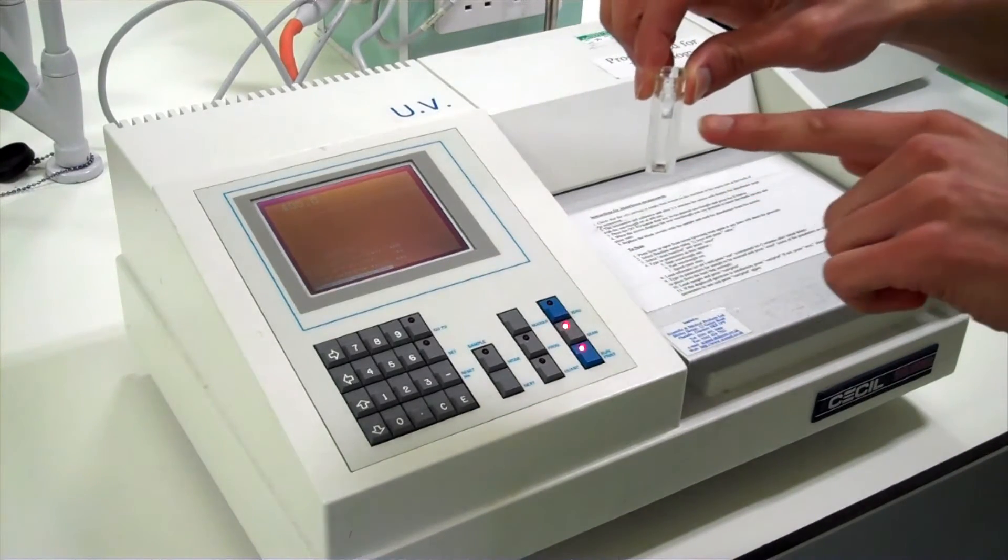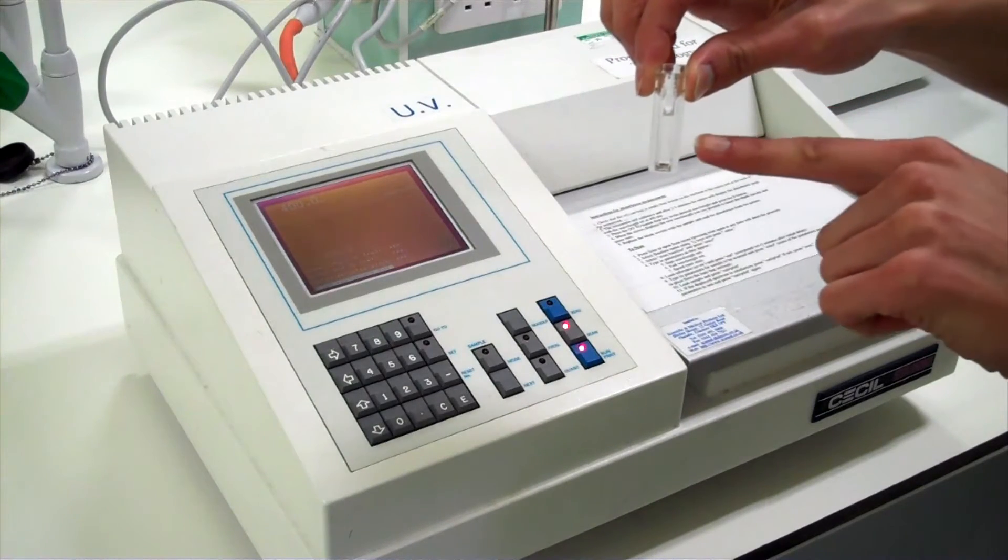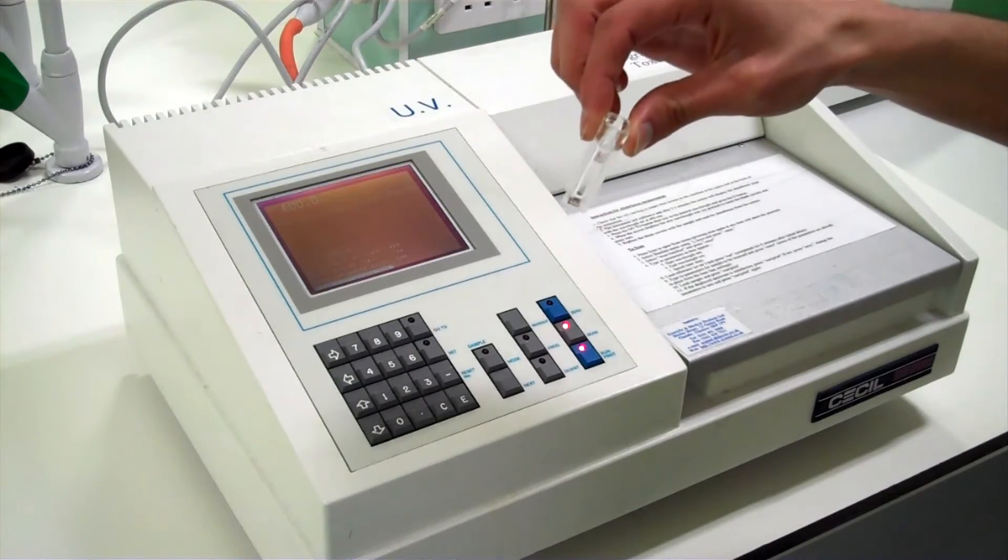Notice how the cuvette is around two thirds full. This ensures that all the light from the spectrophotometer is passing through the solution but is not too full to spill over easily.